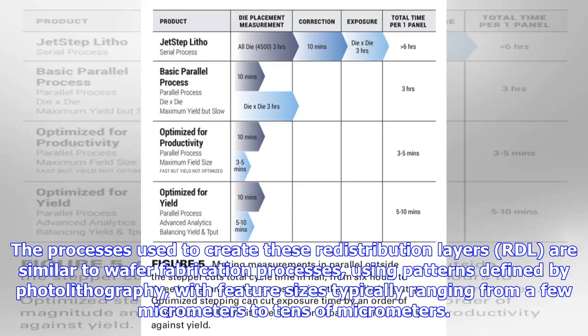The processes used to create these redistribution layers are similar to wafer fabrication processes, using patterns defined by photolithography, with feature sizes typically ranging from a few micrometers to tens of micrometers.